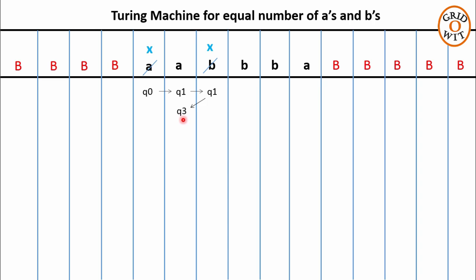The responsibility of state q3 is to reach the starting symbol of the string. So q3 skips this A and also skips this X, moves towards the left. On reading the blank symbol, q3 will become aware that it has moved one step extra. So it takes a right move and changes its state to q0. We have reached the state from where we started, q0, so one iteration is completed. In the first iteration, we have successfully deleted one pair of AB.